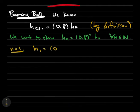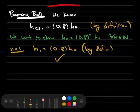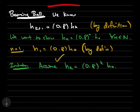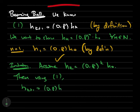Now, assume that hk is 0.8 to the k times h0. Then hk plus 1 is 0.8 times hk, by definition, which, plugging in, is 0.8 times 0.8 to the k times h0, which, doing a little bit of algebra, gives us 0.8 to the k plus 1 times h0. Notice that the right-hand side is the formula with n replaced by k plus 1, so we have established the induction step, and the induction proof is done.